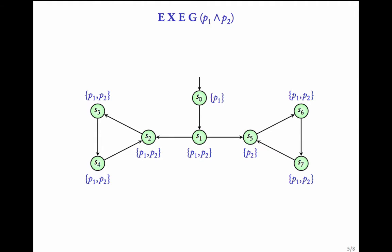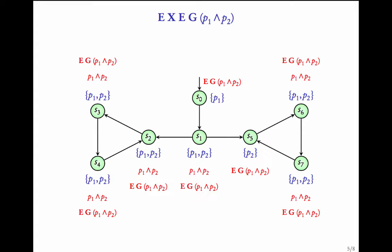Let us start with an example. We have a transition system and we are given the CTL formula in ENF: EX of EG(P1 ∧ P2). The first task is to look at the innermost sub-formula P1 ∧ P2. Let us first label the states that satisfy P1 ∧ P2. Then we look at the first step of the algorithm which labels every state with EG(P1 ∧ P2).